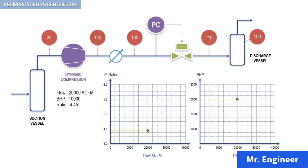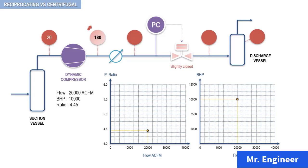Now, let's assume again that the control valve in the discharge process system is slightly closed. This action causes the compressor discharge pressure to rise to 180 psi. The horsepower, however, decreases to 6,000.